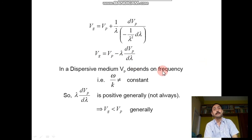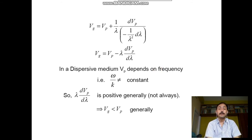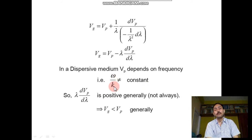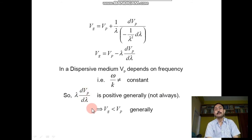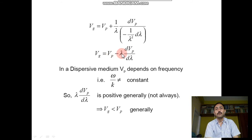In a dispersive medium, vp depends on frequency — that is, ω/k is not constant. So λ(dvp/dλ) is positive, which means vg is reduced by that quantity. Therefore in a dispersive medium, vg is less than vp.